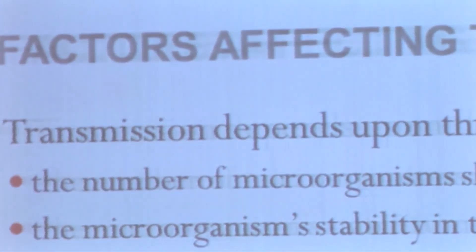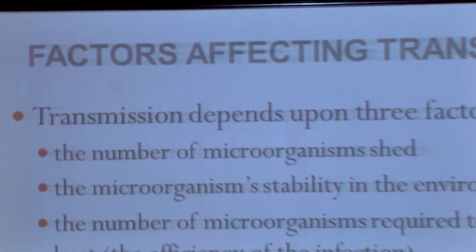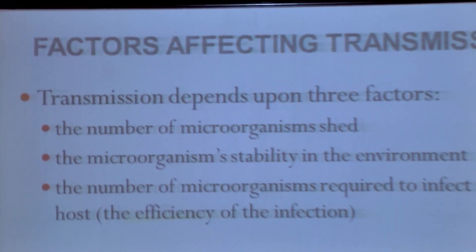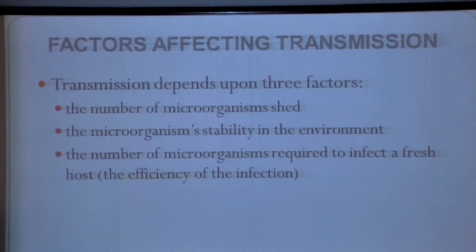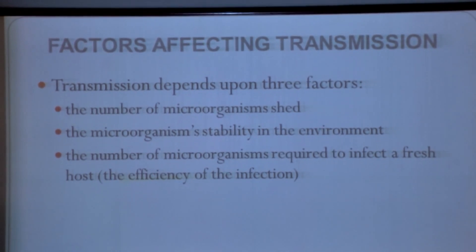There are three important factors which will be affecting the transmission of any infectious agents. One is the number of microorganisms shed, the second is the microorganism's stability in the environment, and the third one is the number of microorganisms required to infect a host. This third factor is also called the efficiency of infection. We will see them one by one.